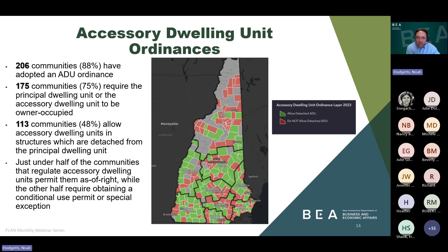The map on the right, from our interactive map, shows communities that allow detached ADUs in green, and communities that do not allow detached ADUs in red.